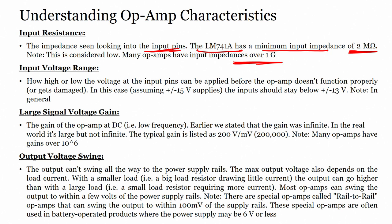Input voltage range refers to how high or low a voltage the input pins can be before the op-amp does not function properly — that is, it will get damaged. Assuming plus or minus 15 volts supply, the input should stay below plus or minus 13 volts. This is the input voltage range.